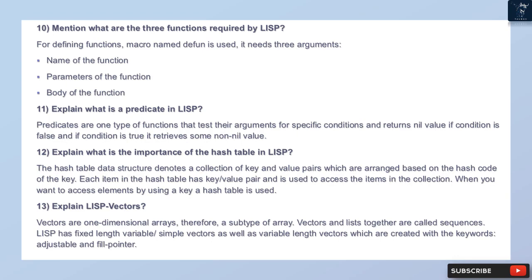Question 13: Explain Lisp vectors. Vectors are one-dimensional arrays, and therefore a subtype of array. Vectors and lists together are called sequences. Lisp has fixed-length simple vectors as well as variable-length vectors, which are created with the keywords adjustable and fill-pointer.